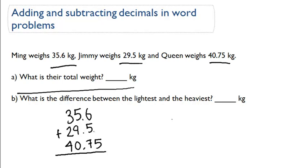Okay, so now we need to add place-holding zeros here. Remember, because there's no number in the hundredths place for these first two weights. Okay, so 0 plus 0 plus 5 is 5.